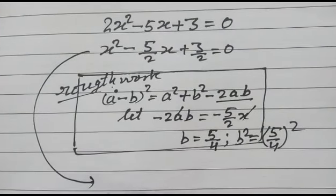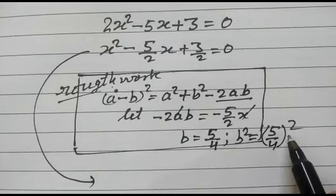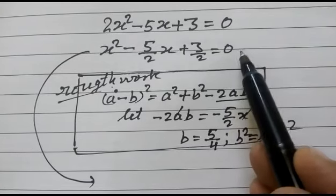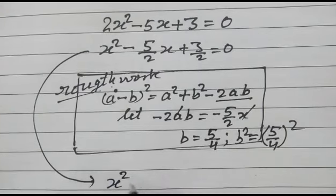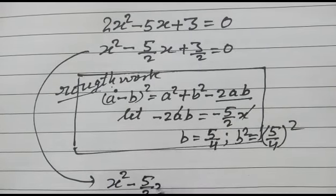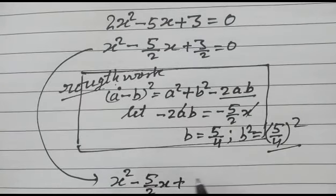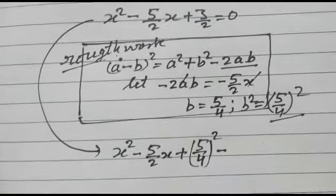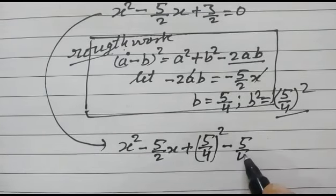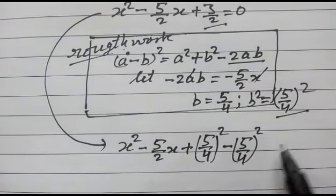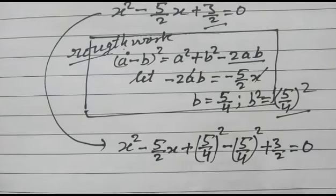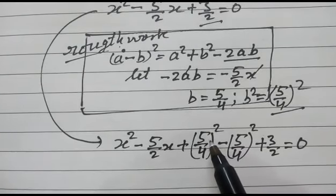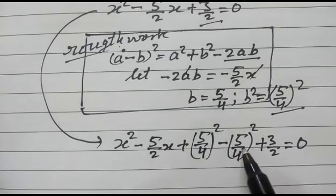Now what we will do: we will add (5/4)² to complete the square form of this equation. So x² minus 5/2 x plus (5/4)², and the same we will subtract (5/4)², plus 3/2 is equal to 0. Here we add (5/4)² to make a complete square, and subtract the same.